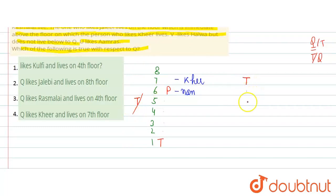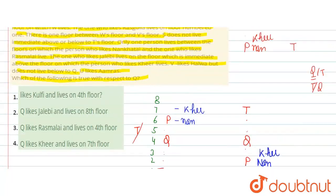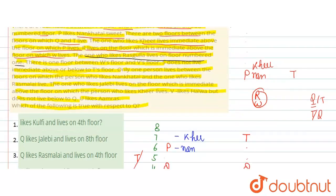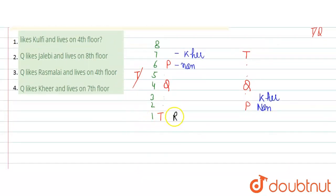So T aapka seventh floor pe hoga. Counting 1, 2, 3, 4 — P aajayega on floor 3. P likes naan khatai, so P ke paas naan khatai aagaya. P se turant upar aagaya kheer. Then Q aur T ke beech mein 2 floors hain — Q aachuka hai on floor 5. Rasgulla aagaya floor number 1 pe — yahaan confirm ho gaya rasgulla.